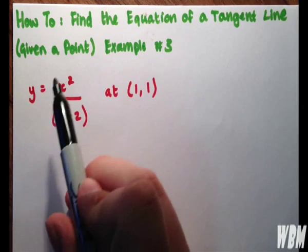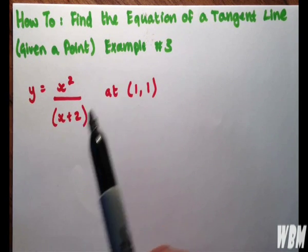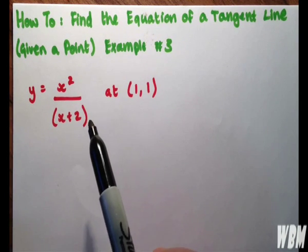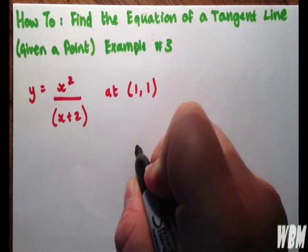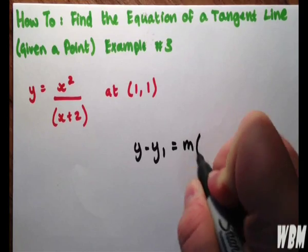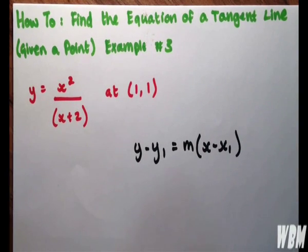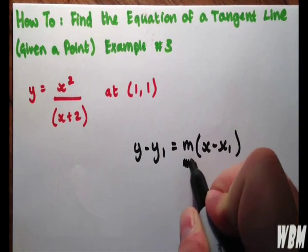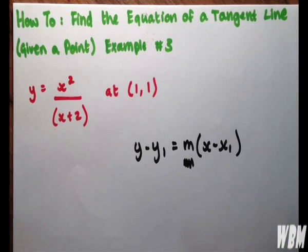Now, the first thing we're going to consider, because by the third example I'm sure you know the point-slope equation off by heart, which is y minus y1 equals m times x minus x1, is finding m, which is the tricky part.